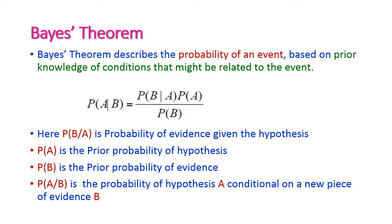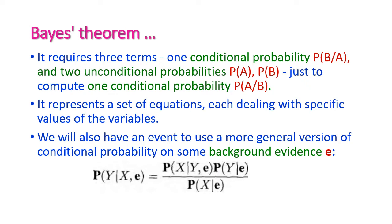P(A) is the prior probability of the hypothesis, P(B) is the prior probability of the evidence, and P(A|B) is the posterior probability of hypothesis A conditional on new evidence B. The Bayes theorem requires three terms — one conditional probability P(B|A) and two unconditional probabilities P(A) and P(B) — to compute one conditional probability P(A|B).